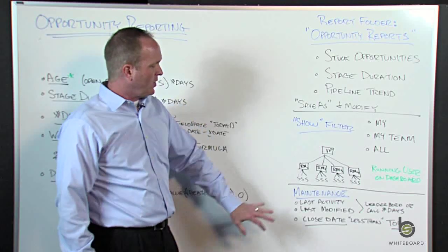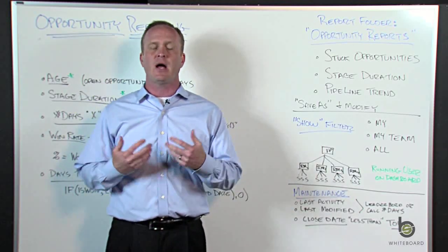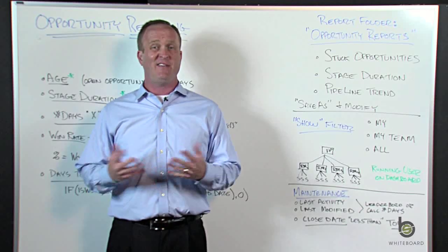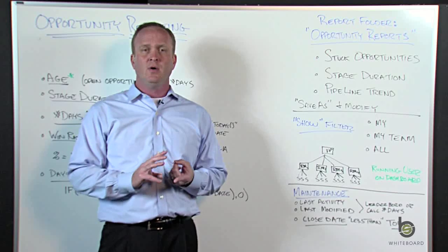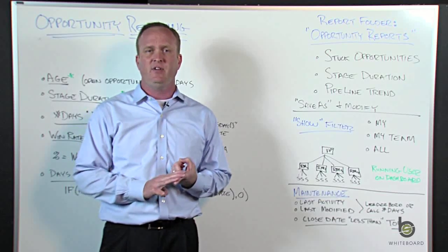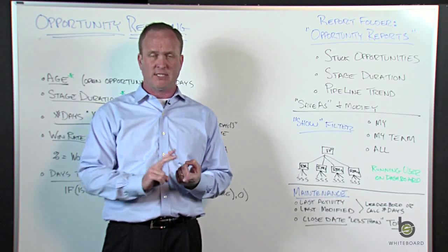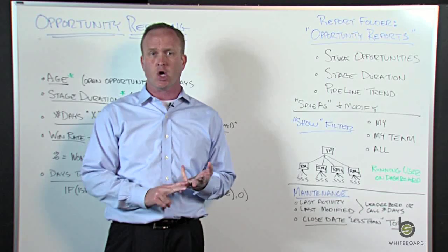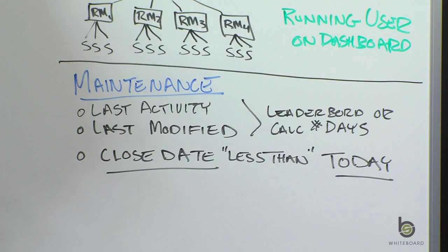I want to wrap up opportunity reporting with a section on maintenance — looking for opportunities that haven't been touched in a while. Two fields we can leverage: Last Activity, meaning the last time we logged an activity — whether a task, meeting, or logged call — and Last Modified, meaning the last time we updated a field on the opportunity, such as the stage, close date, amount, or probability.